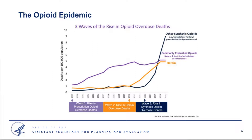The IMF market continues to change, and IMF can be found in combination with heroin, counterfeit pills, and cocaine. The department is also closely monitoring the resurgence of methamphetamine as a growing cause of drug-related overdose deaths. Underlying the sharp increase in overdose deaths is the lack of health system and provider capacity to identify, engage, and provide high-quality, evidence-based opioid use disorder treatment.